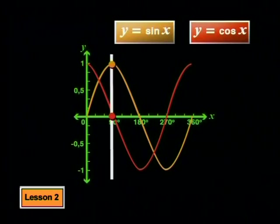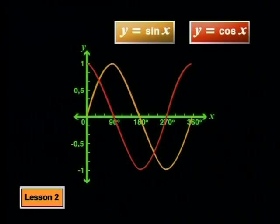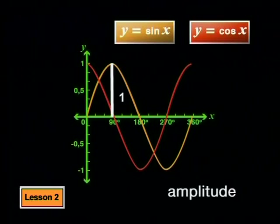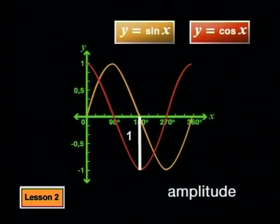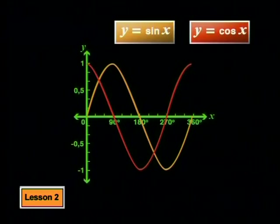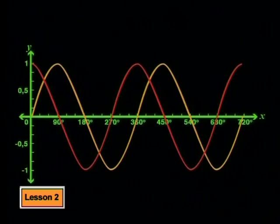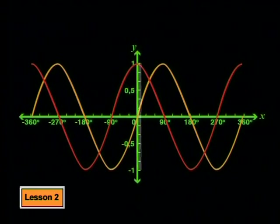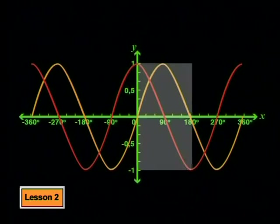At 90 degrees, the sine graph has a maximum value, but the cosine graph cuts the x-axis. We can also say that the two graphs have the same amplitude or height — they both reach a height or amplitude of 1 above the x-axis and the same distance of 1 below the x-axis. Both graphs also have the same shape; they curve in the same way, except that the sine graph starts with a y-value of 0 and the cosine graph starts with a y-value of 1. If we extend both graphs beyond 360 degrees and into negative degrees, you can see that they have a repeating wave pattern. Each full repeat of the wave spreads over 360 degrees.